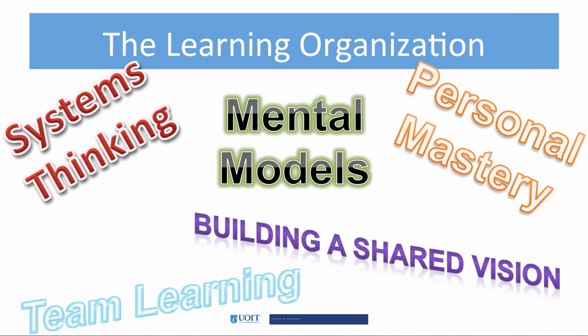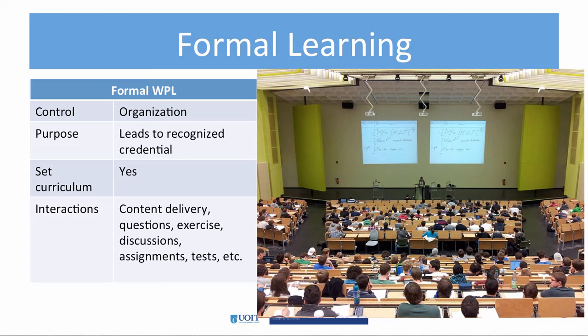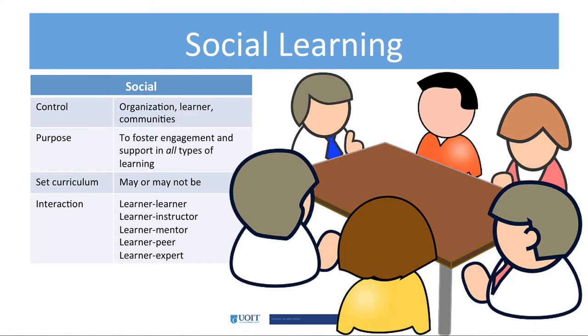Additionally, there are several ways employees are trained. Formal learning leads to recognized credentials, such as a university degree. Informal learning includes seminars or learners' communities of practice, which is different from social learning, where engagement is fostered in multiple ways, often initiated by learners, peers, and experts.